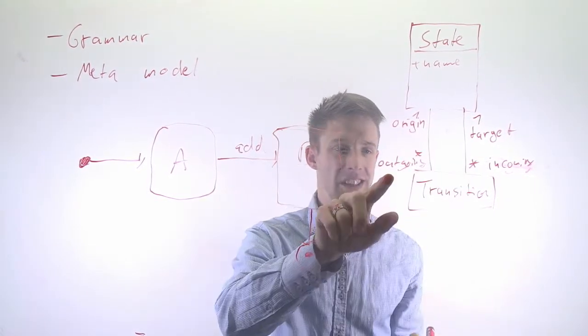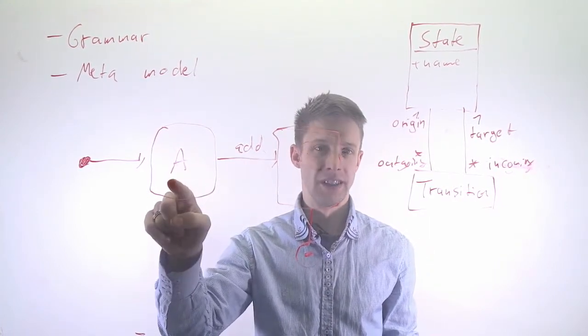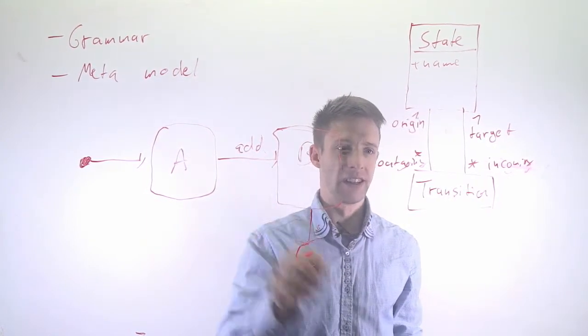So basically the transitions that leave the state machine, like this transition is an outgoing transition of state A, and the ones that come in, like B has the incoming transition here.